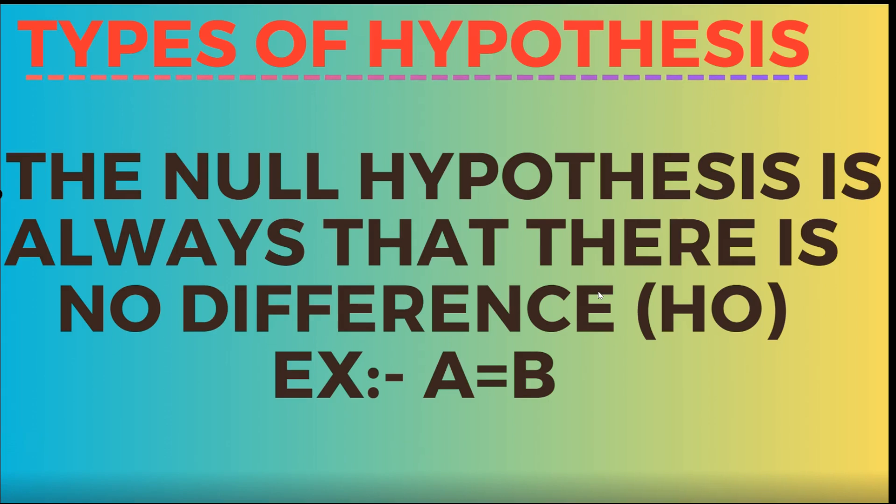First is the null hypothesis, which states there is no difference. It is denoted H0, for example A equals B.